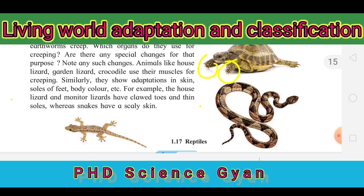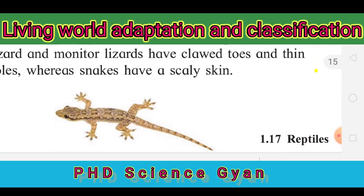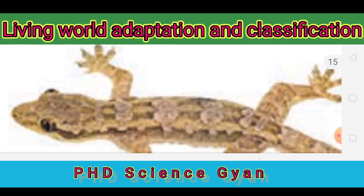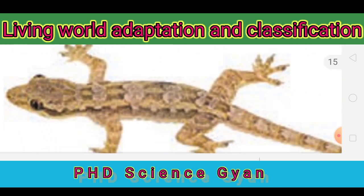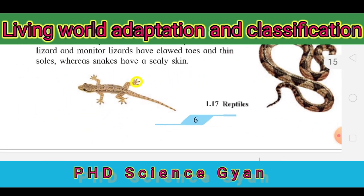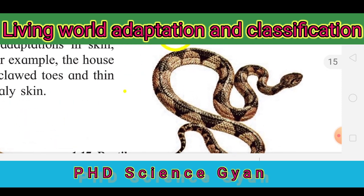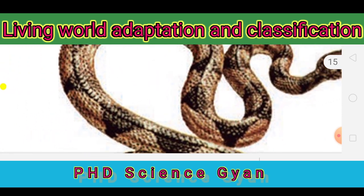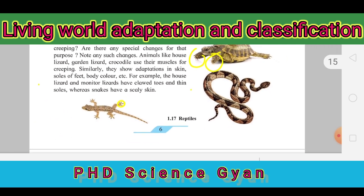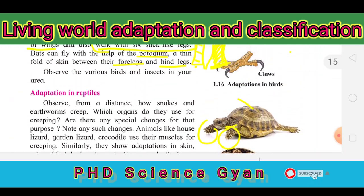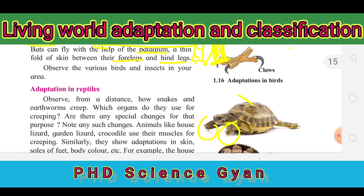For example, the house lizard and monitor lizard have clawed toes and thin soles, whereas snakes have a different structure. The skin of reptiles is scaly, which is a key adaptation.